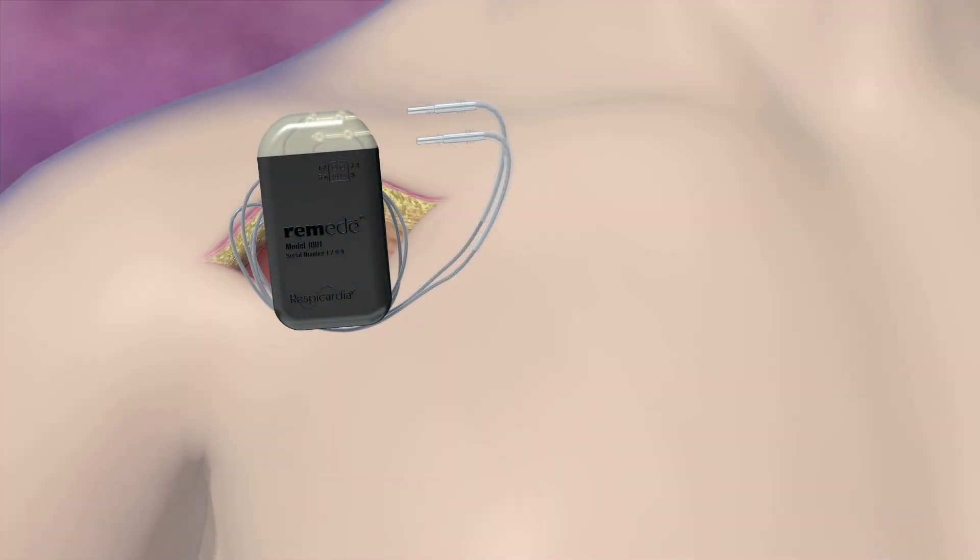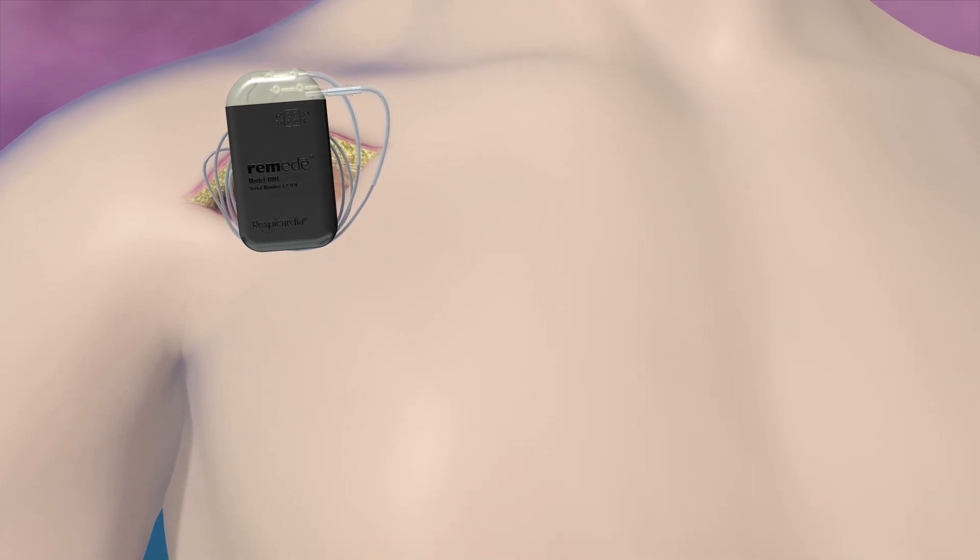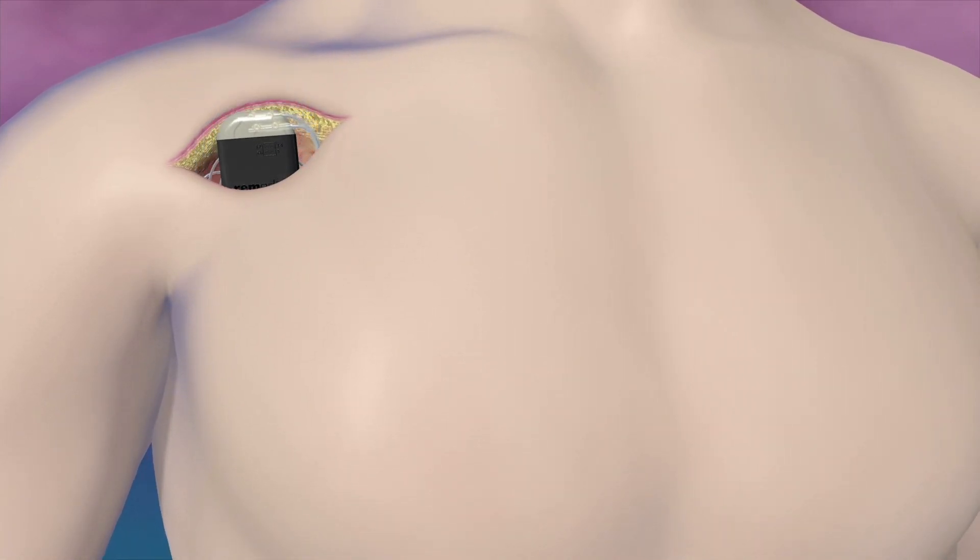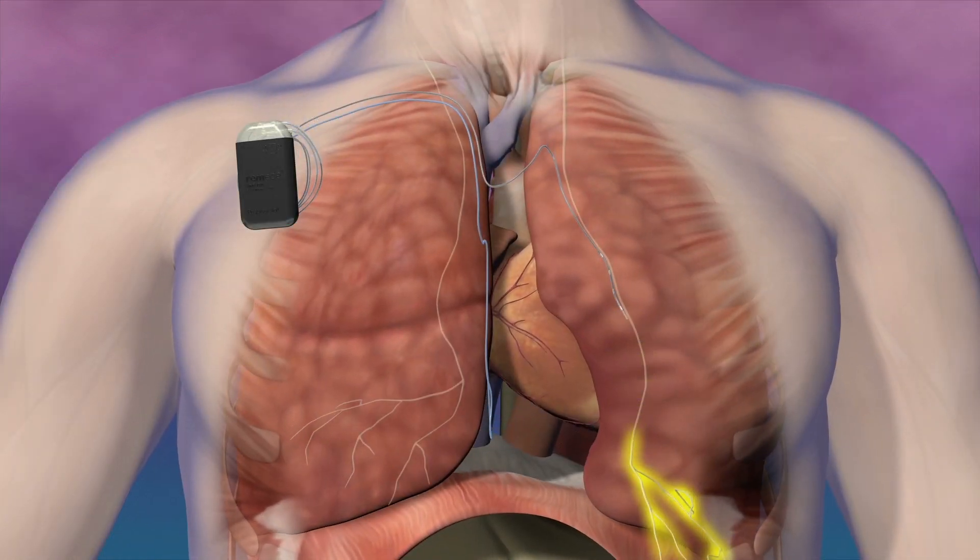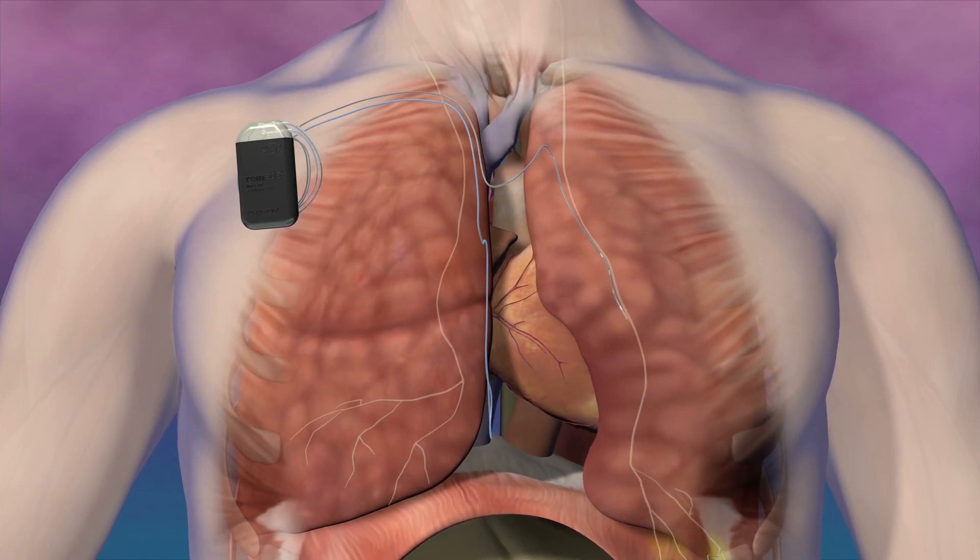The third step in the procedure is implanting the pulse generator. The stimulation lead and sensing lead are connected to the implantable pulse generator and inserted into a pocket. Final device programming is performed. This concludes the implant procedure of the Remedy System for the treatment of central sleep apnea.